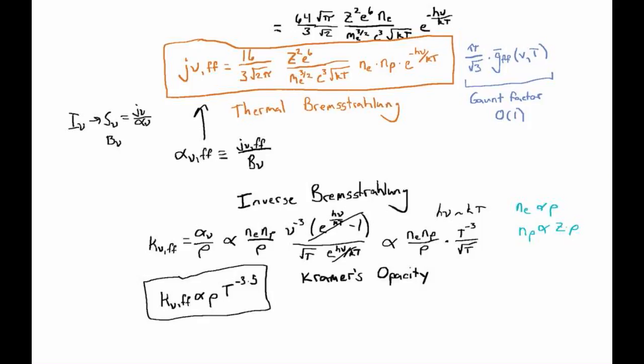Kramer's opacity is a commonly used result for describing interactions in stellar interiors and in accretion disk interiors. The coefficient of proportionality, kappa is rho over T to the 3.5 times 3 times 10 to the 23rd centimeters squared per gram. This is Kramer's opacity, which describes the scaling of opacity with the density and temperature of a plasma. That opacity comes from inverse Bremsstrahlung, which is the reverse process of the thermal Bremsstrahlung we just described.